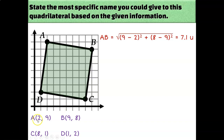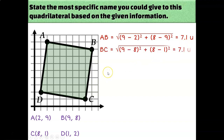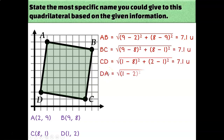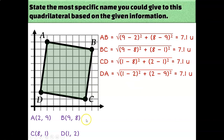The length of AB using the distance formula gives me about 7.1 units. And if I do the same thing for the lengths of BC, CD, and DA, you'll see that we get the same answer for all four sides. We've done a lot of distance formula work so far this year, so I'm not going to go super slow through how to plug each of these numbers into the formula.